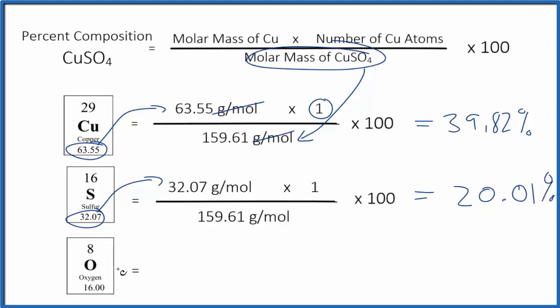Pause and try to figure out the percent composition by mass for the oxygen in CuSO4. And remember, we have four oxygen atoms.